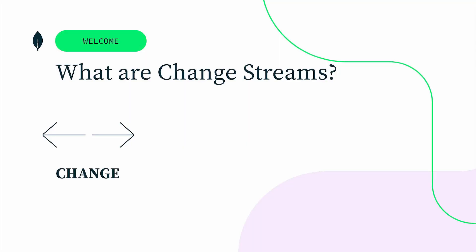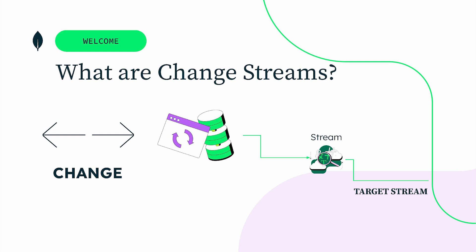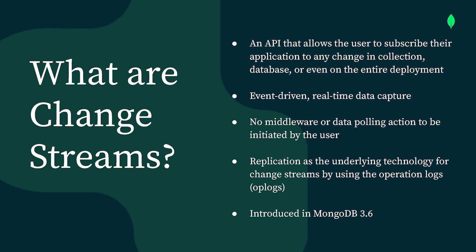To begin with, let's try to understand what Change Streams actually are. As the name indicates, Change Streams means capturing any change which happens on your database and then making streams out of it and storing it into a target system. So basically, you would be capturing any CRUD operations happening on your database and then streaming it in real time into any target system, which can be on the same deployment or maybe some other deployment. Change Stream is basically an API which allows users to subscribe their application to any change in the collection, database, or the entire deployment and perform useful operations on top of that data. It's an event-driven and real-time data capture mechanism, similar to other data capture tools like Kafka, but it is an in-house service provided by MongoDB starting from MongoDB 3.6.